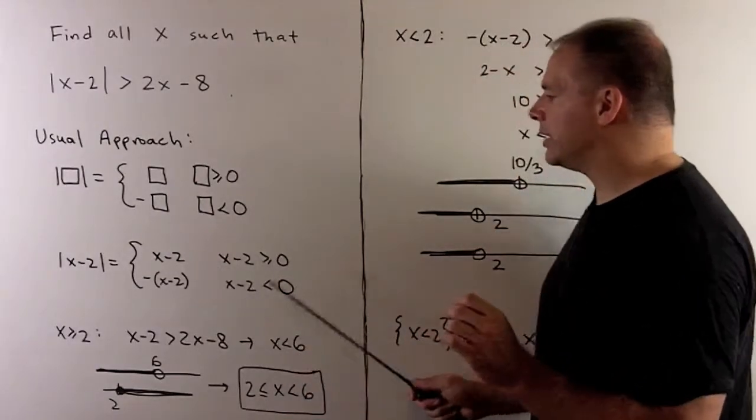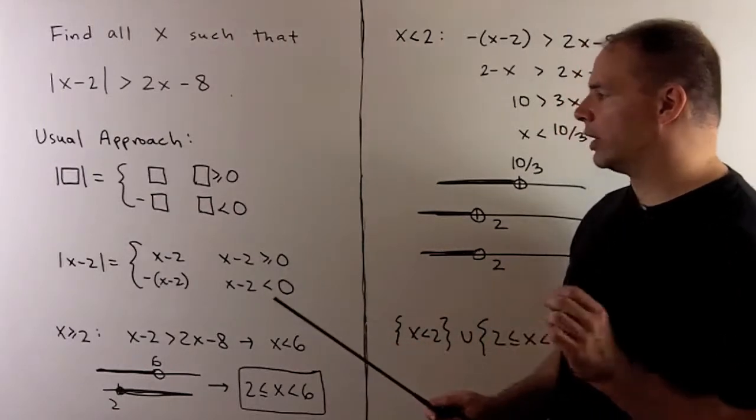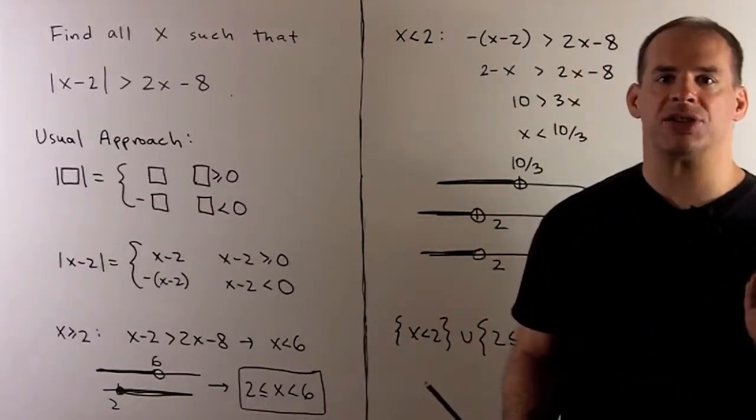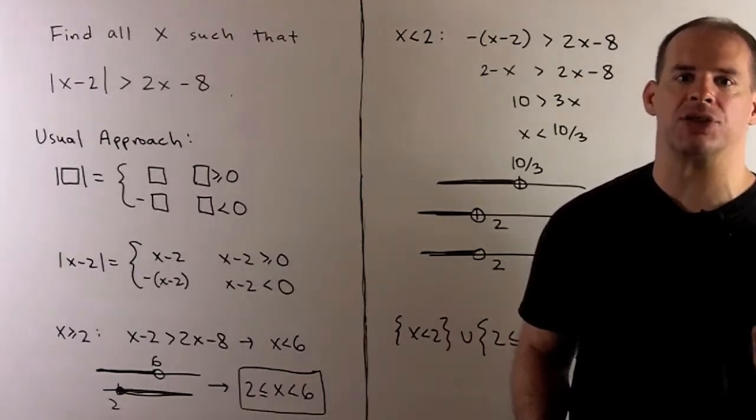If we put x minus 2 into the box, we'll have these two ways to think of our function. When x is greater than or equal to 2, it's equal to x minus 2. When x is strictly less than 2, it's minus parentheses x minus 2.